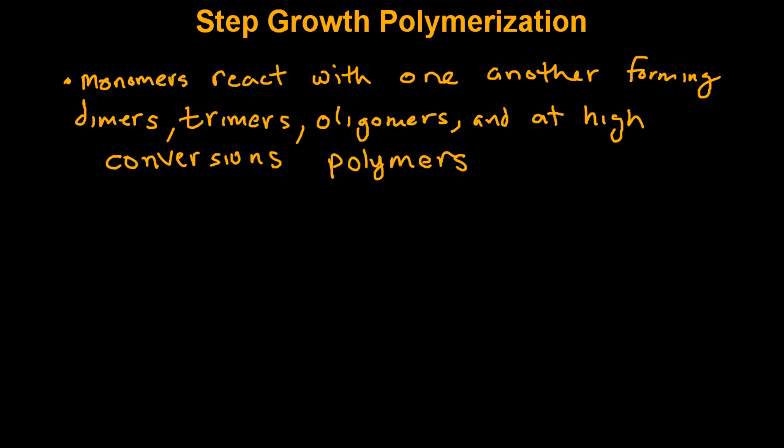Step growth polymerization is a type of polymerization in which monomers react with one another, first forming low molecular weight species such as dimers, trimers, oligomers, and then at high conversions forming polymers.